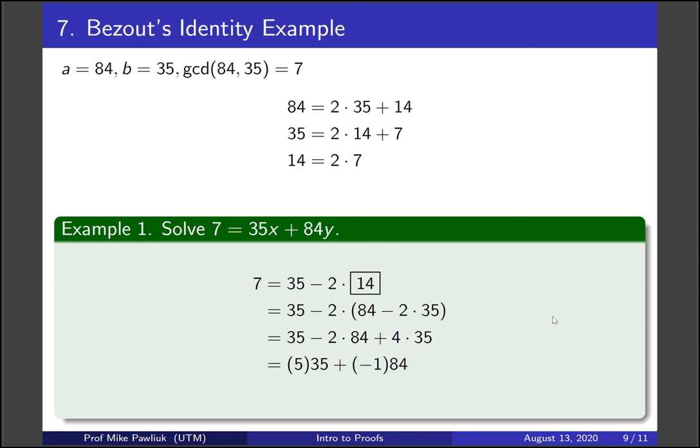So a pair of integers that solve the equation is x equals 5 and y equals minus 1. The major idea here is that we want to write 7 as a collection of 35s and 84s. Anytime we don't have a 35 or an 84, we replace them using these equations. This seems easier than it is.